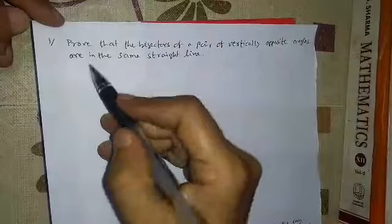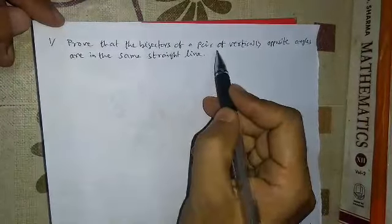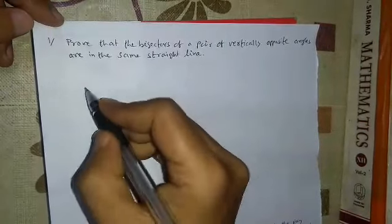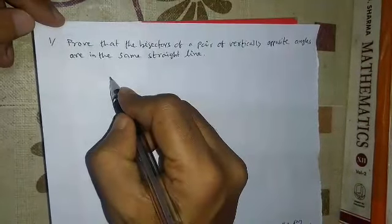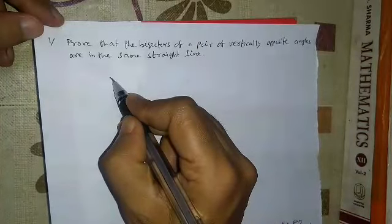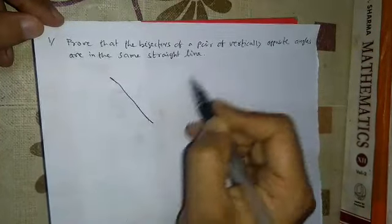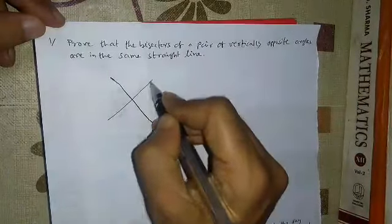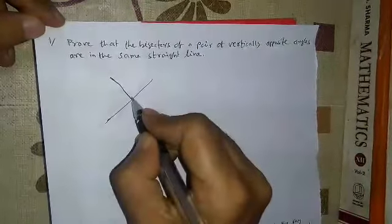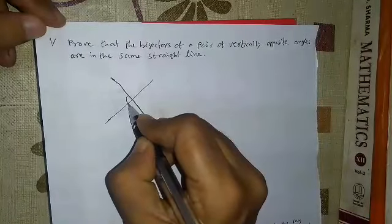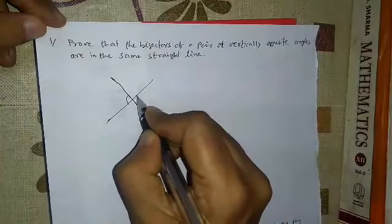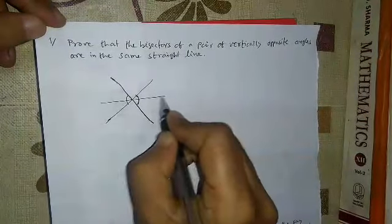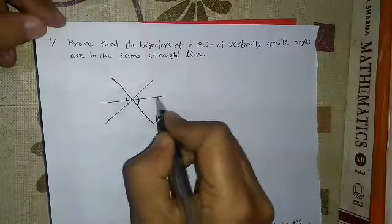Question number one: prove that the bisectors of a pair of vertically opposite angles are in the same straight line. We will make vertically opposite angles here. Suppose this is a pair of vertical opposite angles, and here we draw a line. This is a straight line and we will prove it.